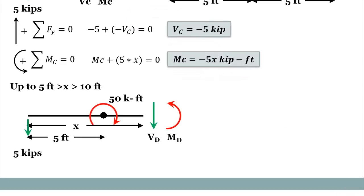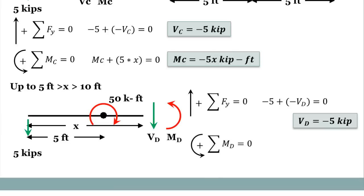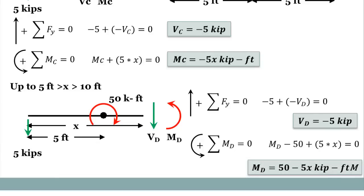For the second section at D, following the same steps: summing forces in Y gives minus five plus minus VD equals zero, so VD equals minus five kips. Summing moments about D gives MD minus 50 (the concentrated moment) plus 5x equals zero. Solving for MD gives the equation 50 minus 5x.